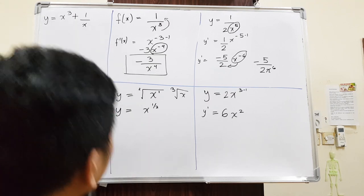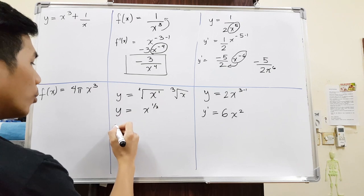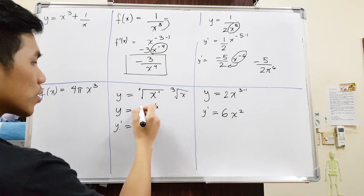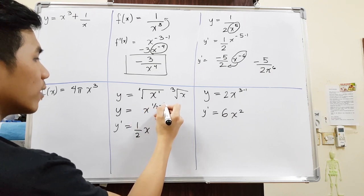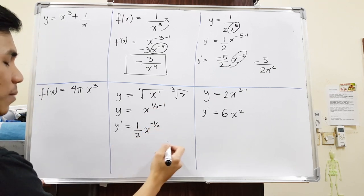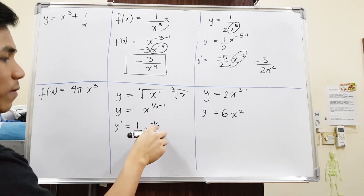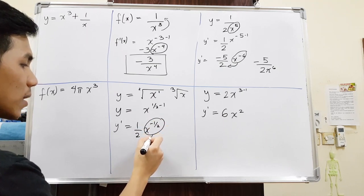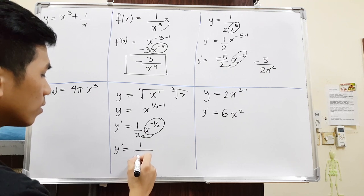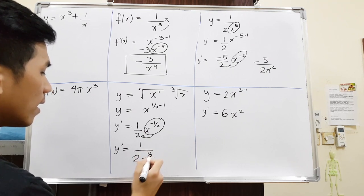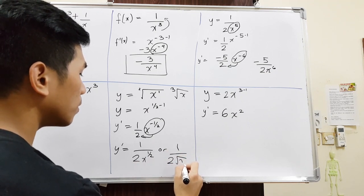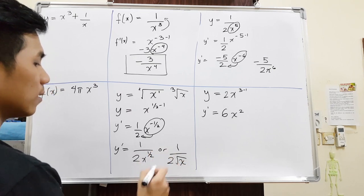Now we differentiate it. We bring the one half to the front side, so it's one half times x to the power of one half minus 1, which is negative one half. This could be an answer, but we can simplify it so there's no negative power — bring it down to the denominator: 1 over 2x to the power of one half. We can also write this as 1 over 2 root x, putting it back as a radical.